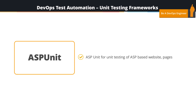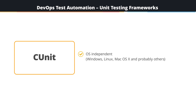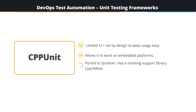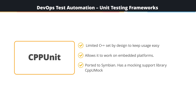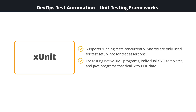These are some of the test automation frameworks available for unit testing. ASP unit for unit testing of ASP-based websites and pages. API Sanity Checker for unit test generation for C and C++ libraries — it can also automatically generate reasonable input data for every API function. C unit for OS-independent platforms including Windows, Linux, Mac OSX, and others. CPP unit for C++ is designed to keep usage easy and allow it to work on embedded platforms. C++ is buried in macros, so the learning curve for a C programmer is minimal, and it is ported to Symbian and has a mocking support library, CPP-UMOC.